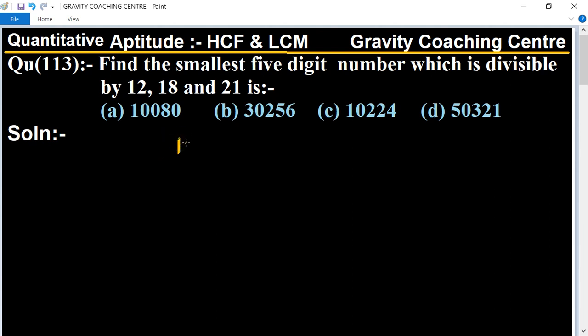So we have 12, 18, 21. First we take the table of 3. So 3 times 4 is 12, 3 times 6 is 18, and 3 times 7 is 21.